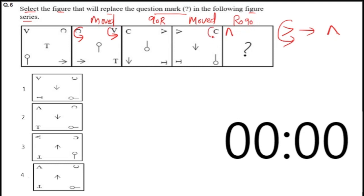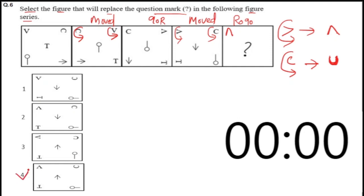Rotate 90 degrees and equal place. In the fourth figure, C is like this, and rotating 90 degrees means C will be upward. So if you look at V and C together: V downward and C upward — option 4 is your answer.